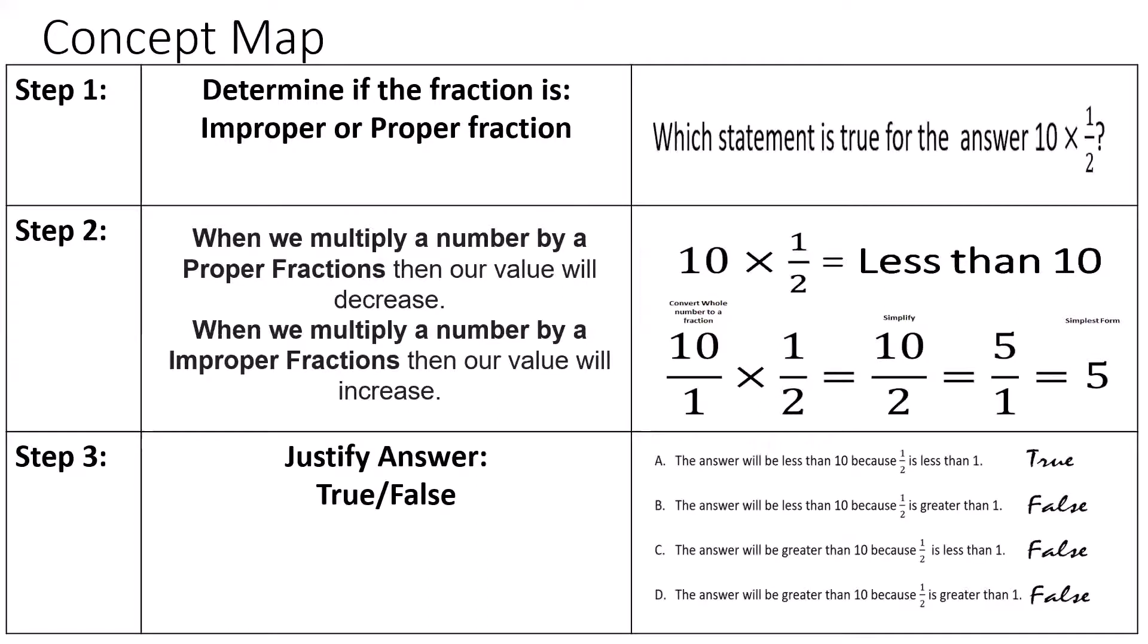Now let's eliminate our answer choices by using the true false method. The answer will be less than 10 because one half is less than 1. True. The answer will be less than 10 because one half is greater than 1. False. The answer will be greater than 10 because one half is less than 1. False.